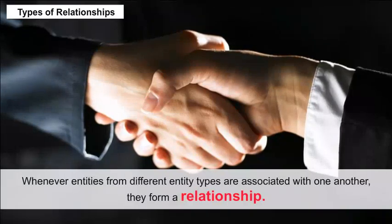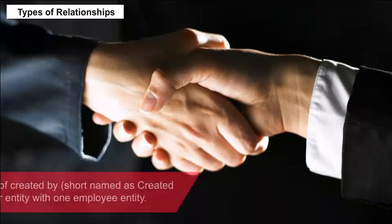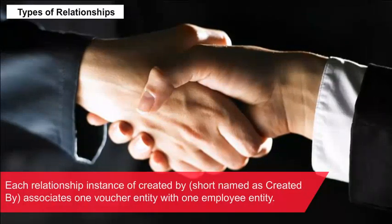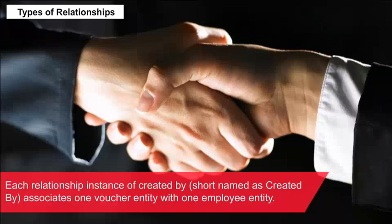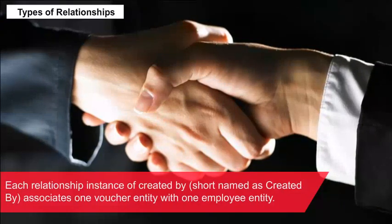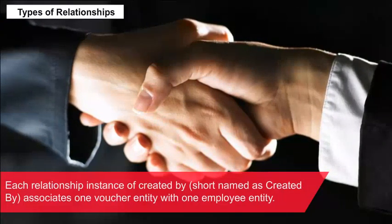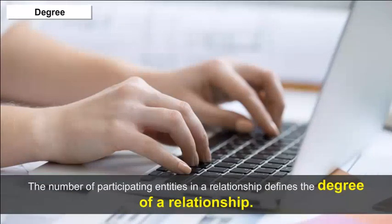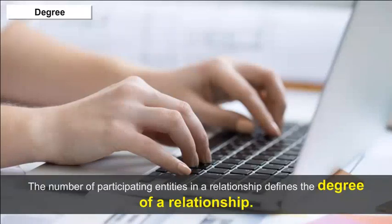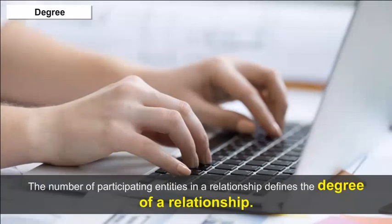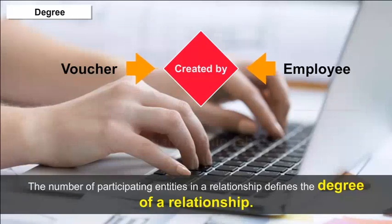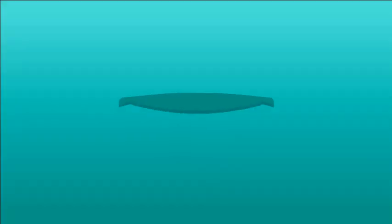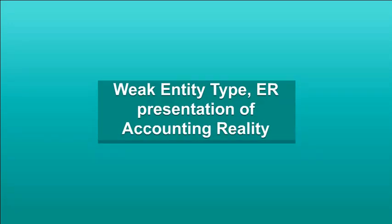Types of Relationships — whenever entities from different entity types are associated with one another, they form a relationship. Each relationship instance, for example 'created by', associates one voucher entity with one employee entity. Degree — the number of participating entities in a relationship defines the degree of a relationship. A relationship between two entities is called binary, and a relationship between three entities is called ternary.